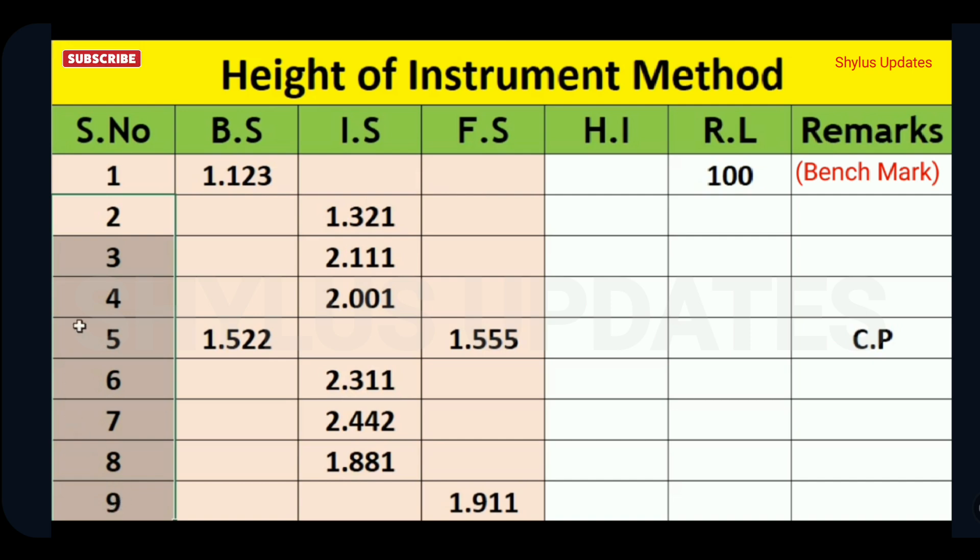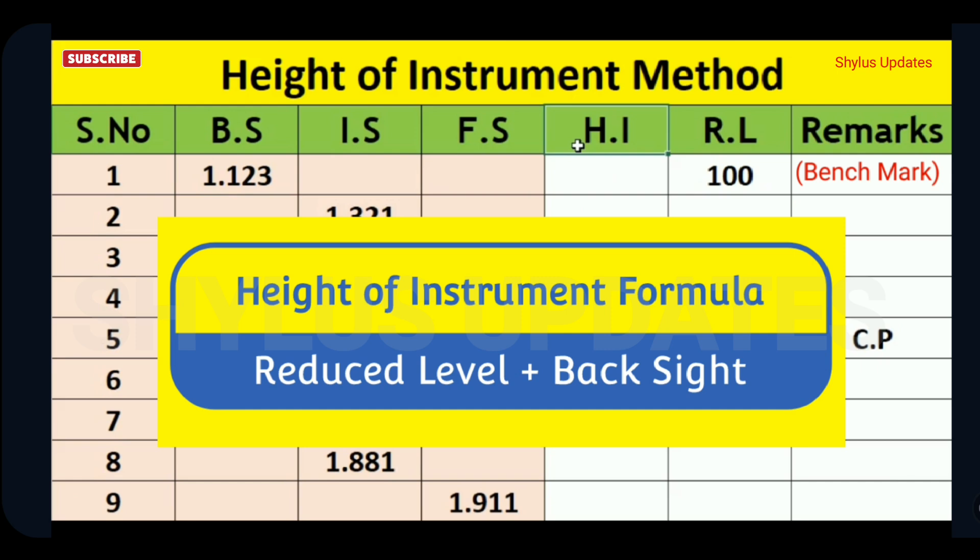To calculate reduced level of remaining points, that is from 2 to 9, we need HI, that is height of instrument. To calculate HI, use this simple formula: reduced level plus back site. Which is equal to 100 plus 1.123. You will get 101.123 meter.